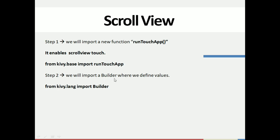Then we'll import Builder, where we define values such as the text, its size, height, and the scroll view x-axis and y-axis values. All these steps we are going to define in the Builder. For using that, we import Builder from kivy.lang, which is another class library file.